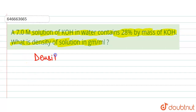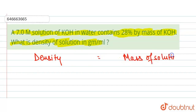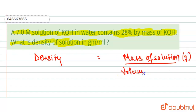To calculate the density of the solution, it will be the mass of the solution in grams divided by the volume of the solution in milliliters.